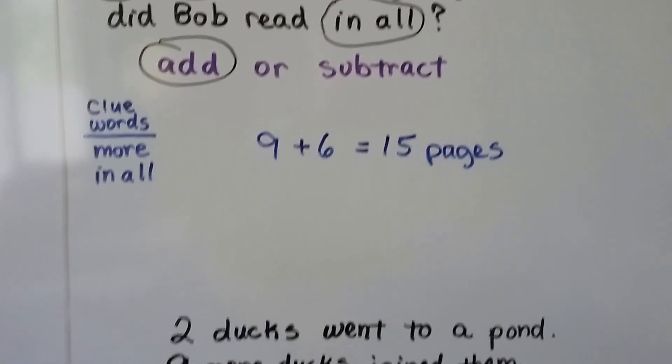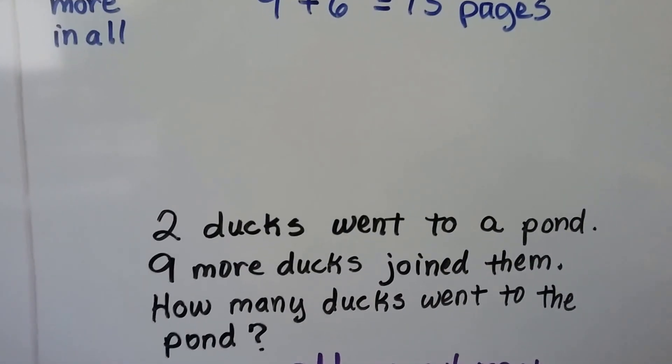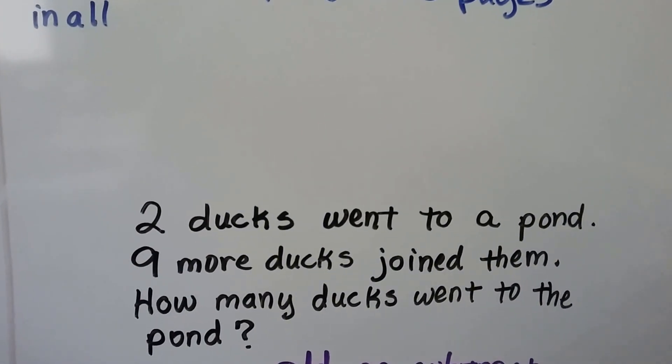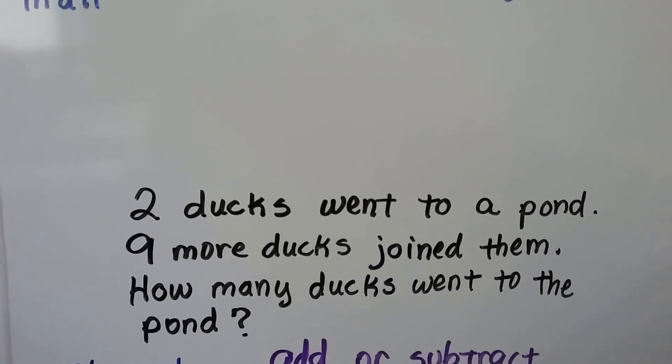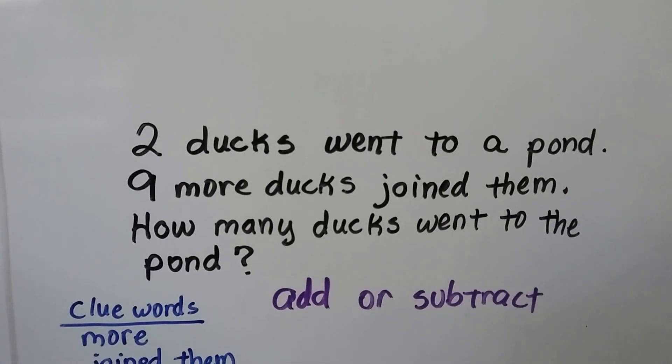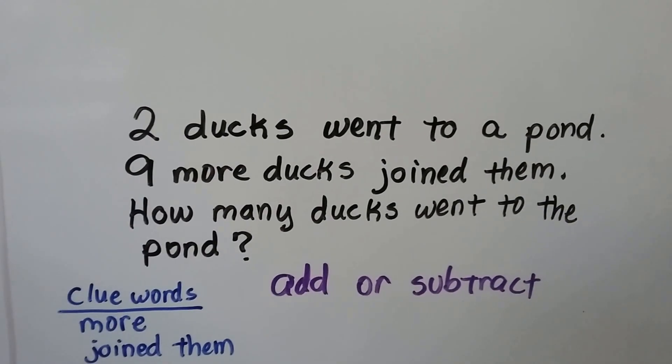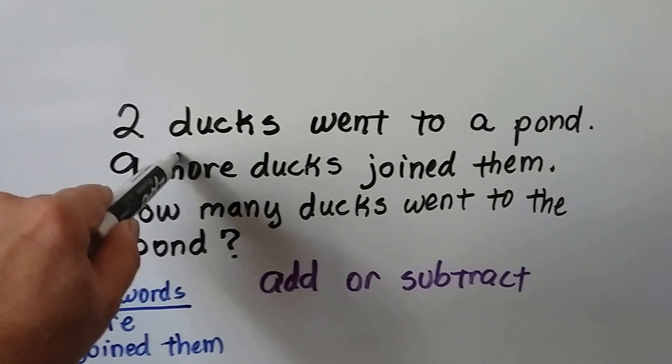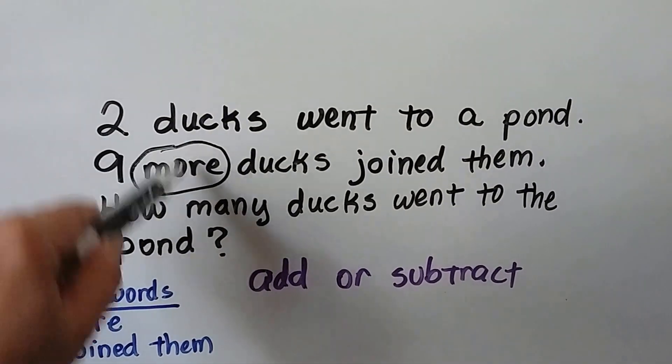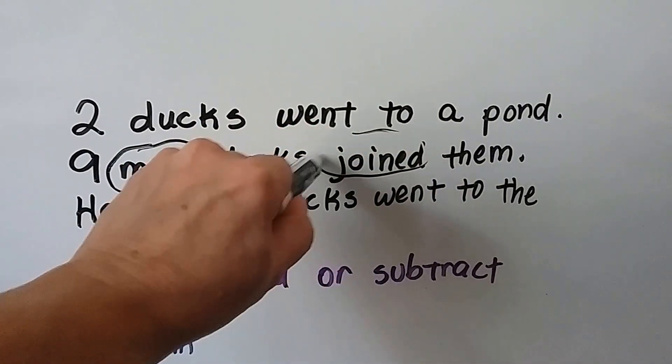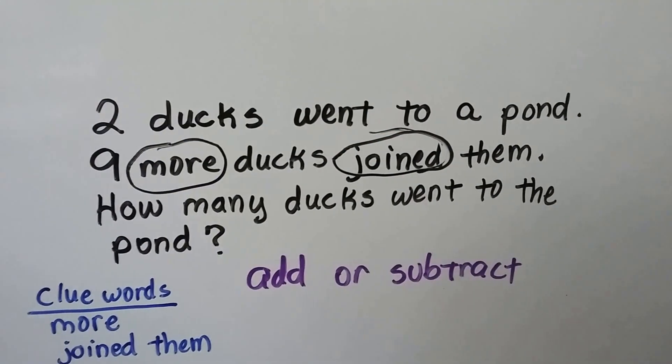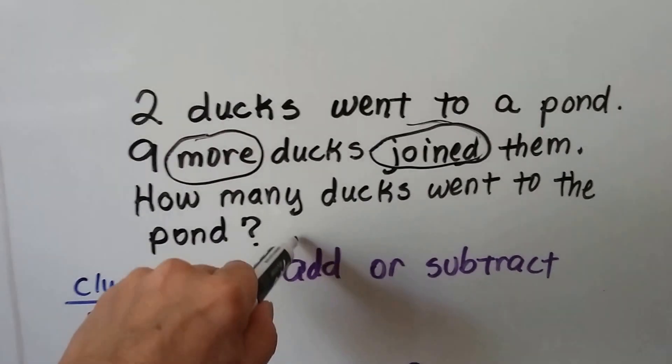Let's try this one. Two ducks went to a pond. Nine more ducks joined them. How many ducks went to the pond? Our clue words are more and joined them. It says nine more ducks. And it says they joined them. When you join something,